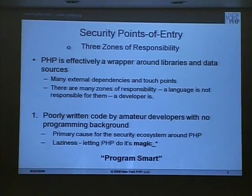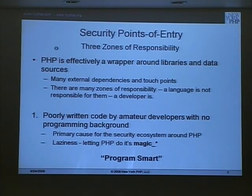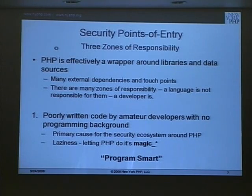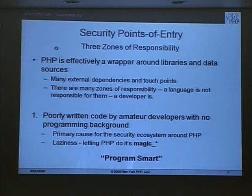What are some of the specific zones of responsibility for security, and specifically in PHP, how do they kind of all fit together? PHP is largely a scripting language, but its real power comes from wrapping libraries and wrapping external data sources. There are a lot of dependencies that it has. Each interface that it has, and every place it interacts with something else, there's a potential security problem. It really is not the responsibility of the language in any technology to mitigate all of those — it's the responsibility of the programmer, just like in any other platform.